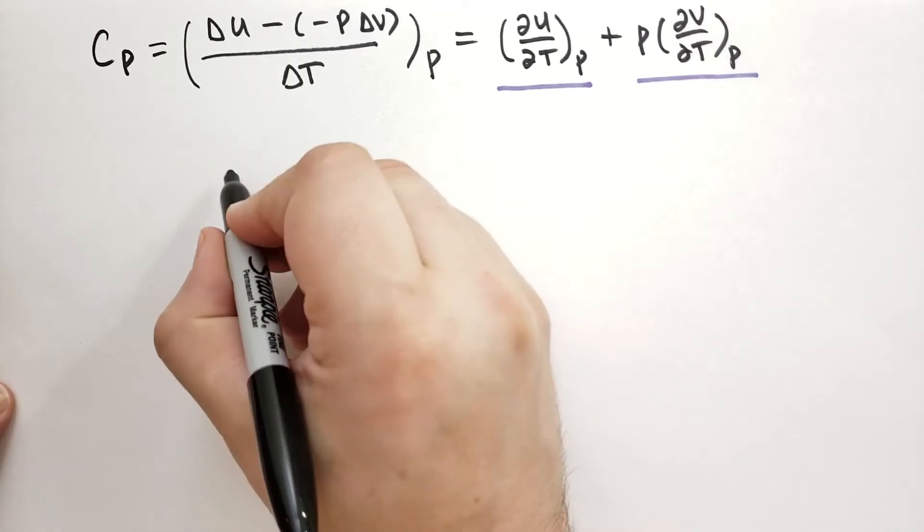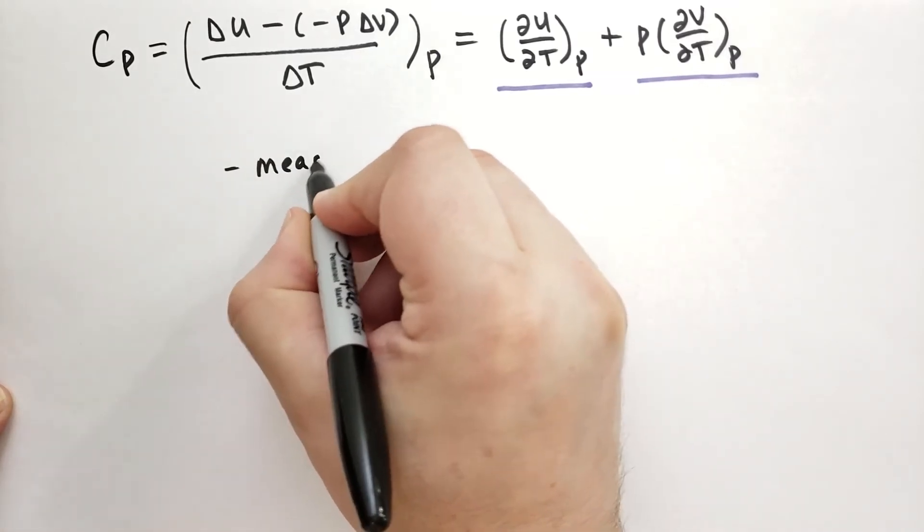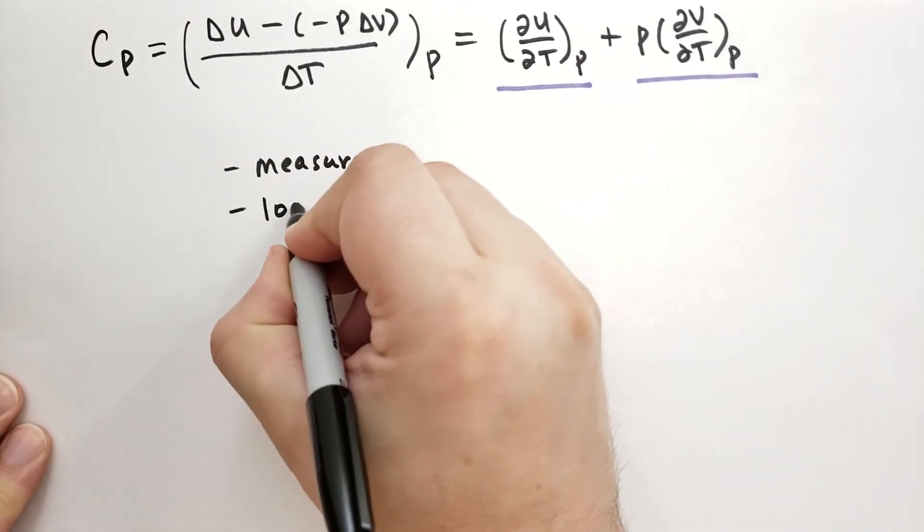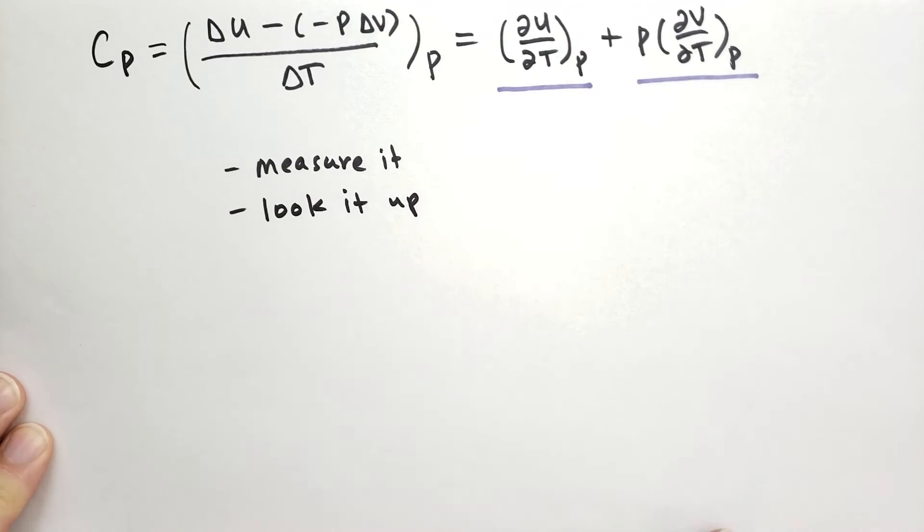One way is to measure it. So you would actually set up a system to transfer heat, and you measure how much heat was transferred, and then you measure the change in the system that received the heat. The other way you can do that is you can look it up in a book. And if you are in an engineering environment where you need to know the exact value, then I encourage you to go get a book, a reliable book, and these books are quite large, and look up these values in the book.